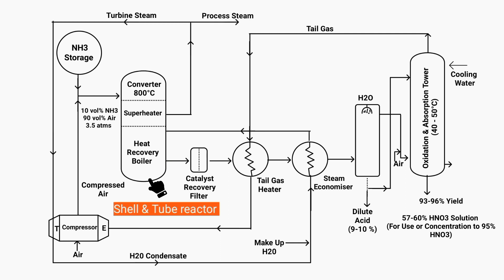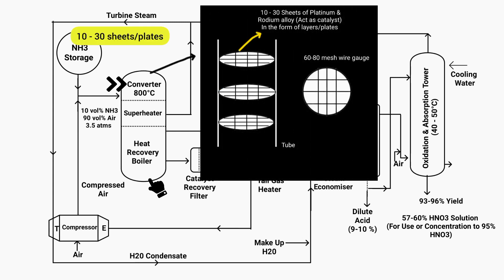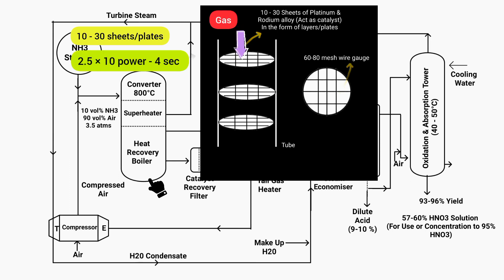The shell and tube reactor is mainly divided into a converter section, a superheater section, and a heat recovery boiler section. The converter section is on the tube side, while the superheater and heat recovery boiler sections are on the shell side. Inside it, there are 10 to 30 sheets of platinum and rhodium alloy acting as a catalyst, of 60 to 80 mesh wire gauge, arranged in layers inside the tube. The contact time of the gas with the catalyst is approximately 2.5 × 10⁻⁴ seconds, meaning the gas passes through very quickly.